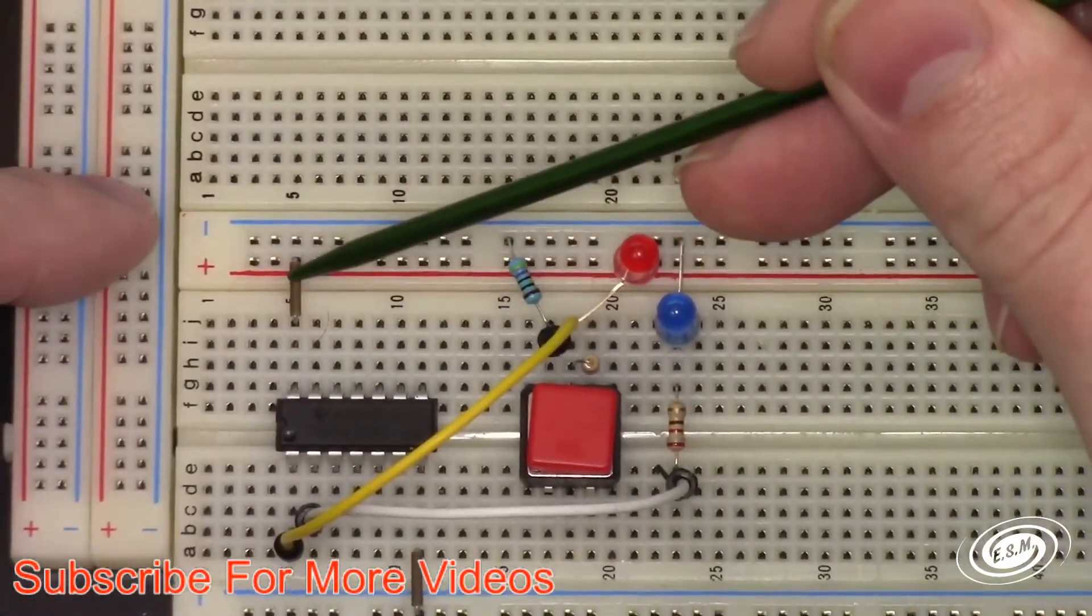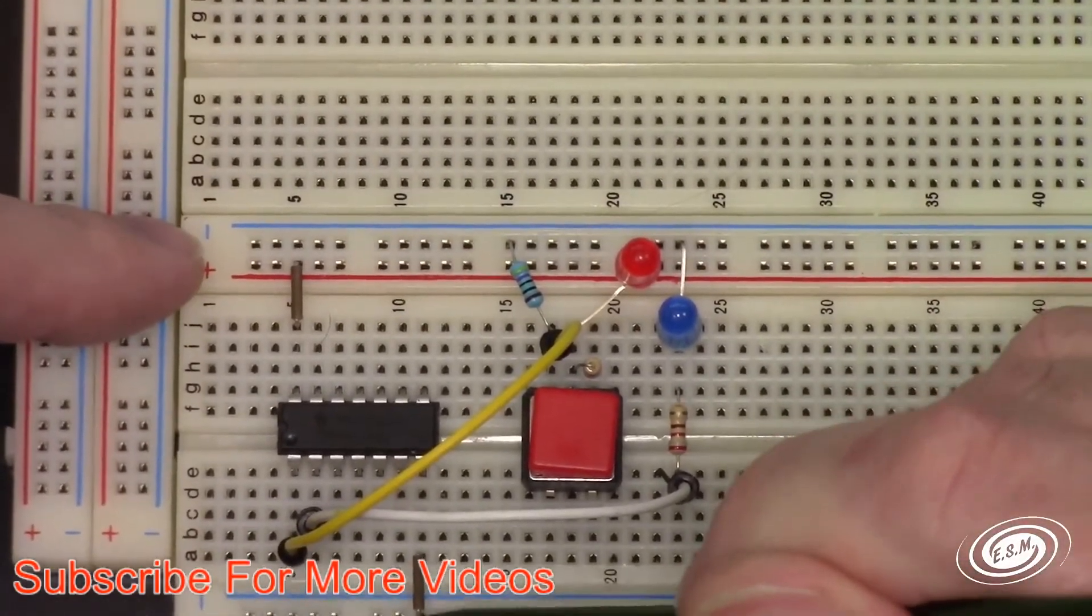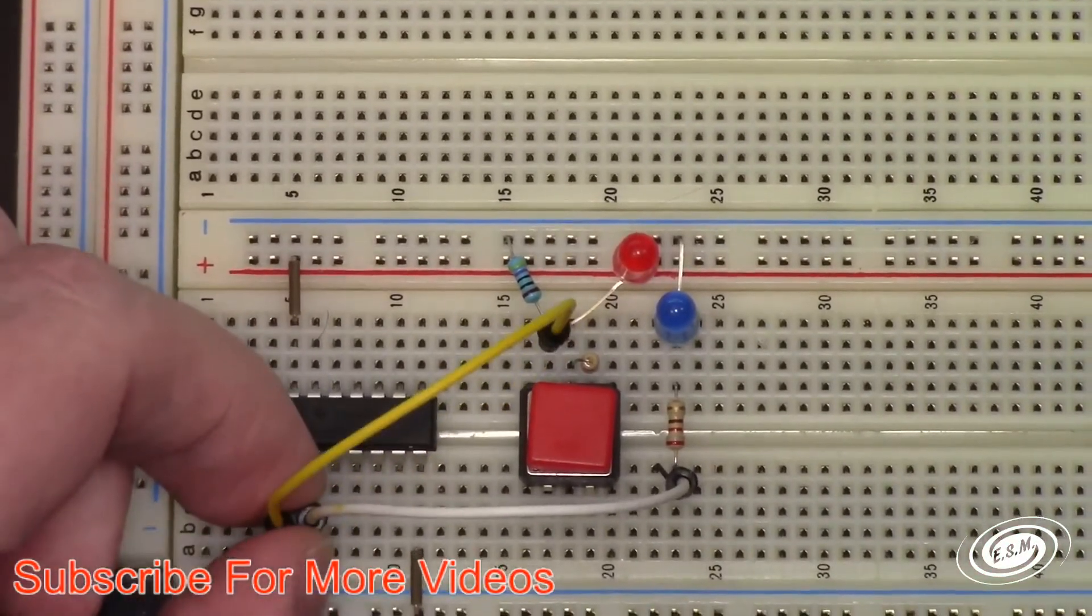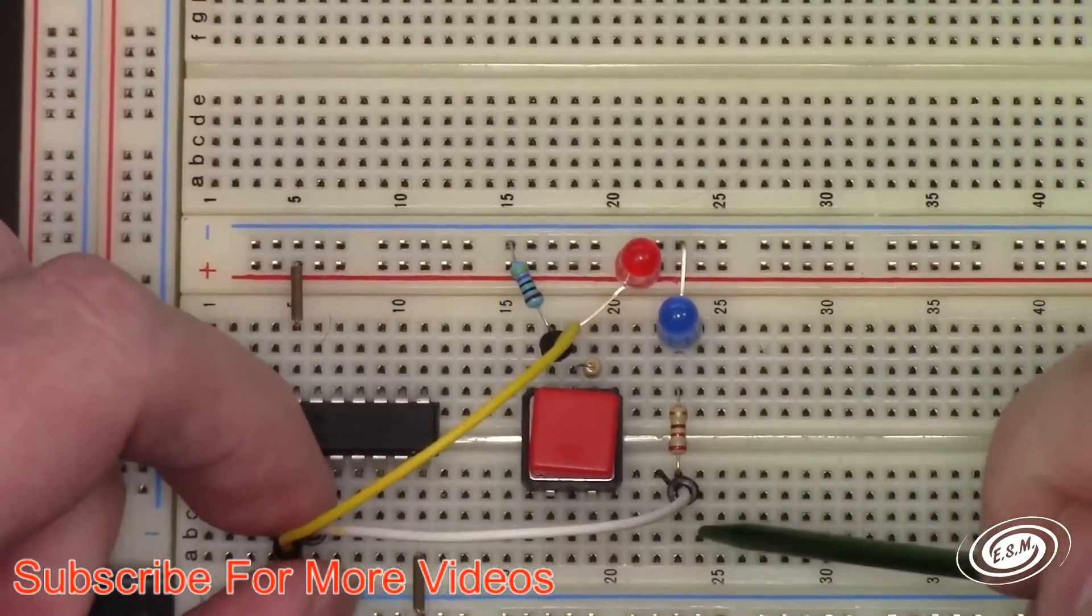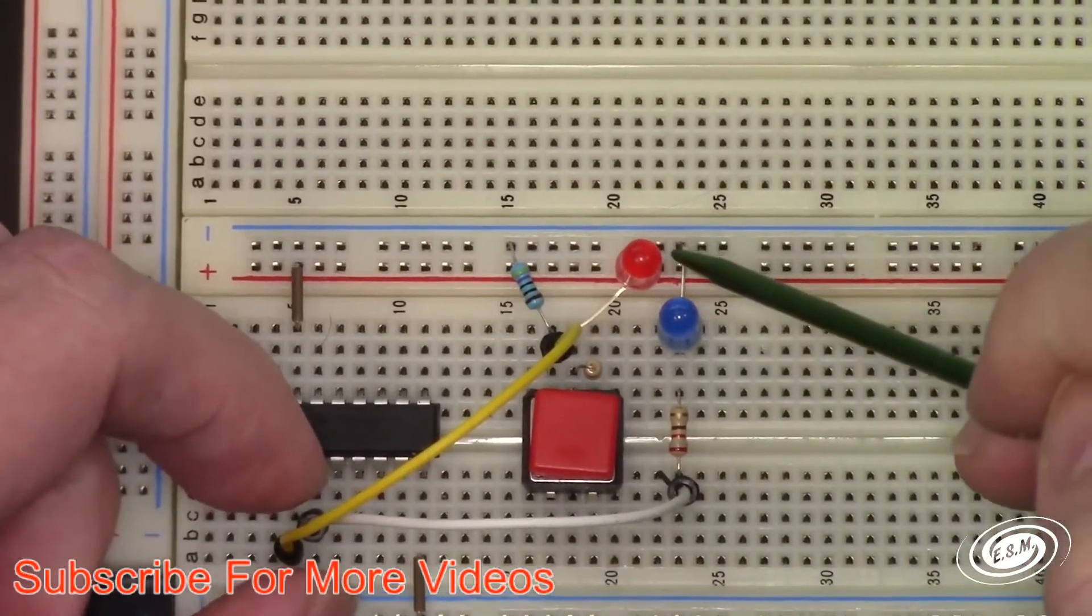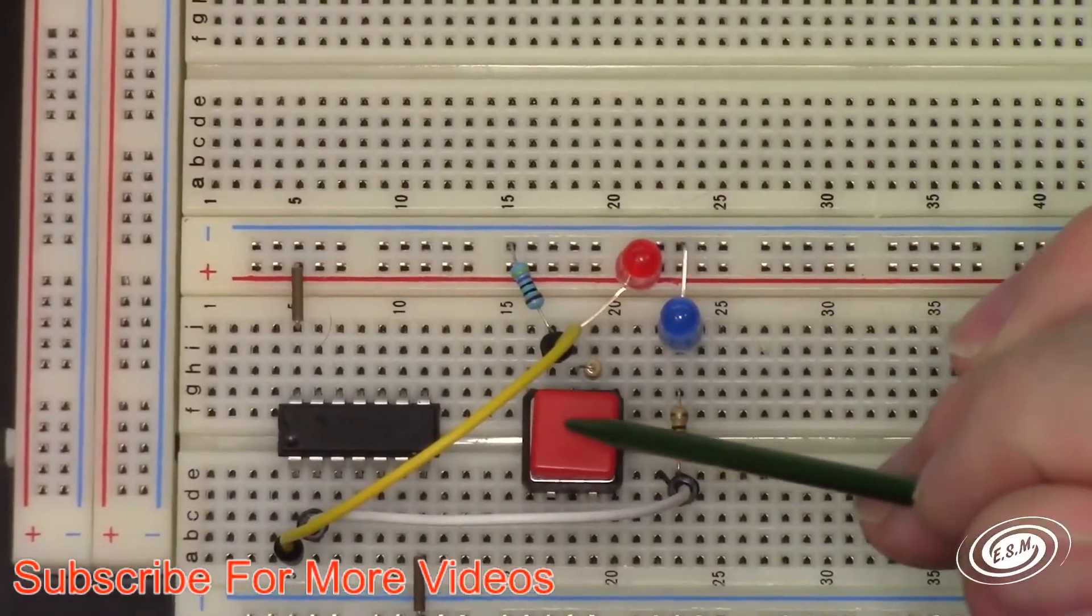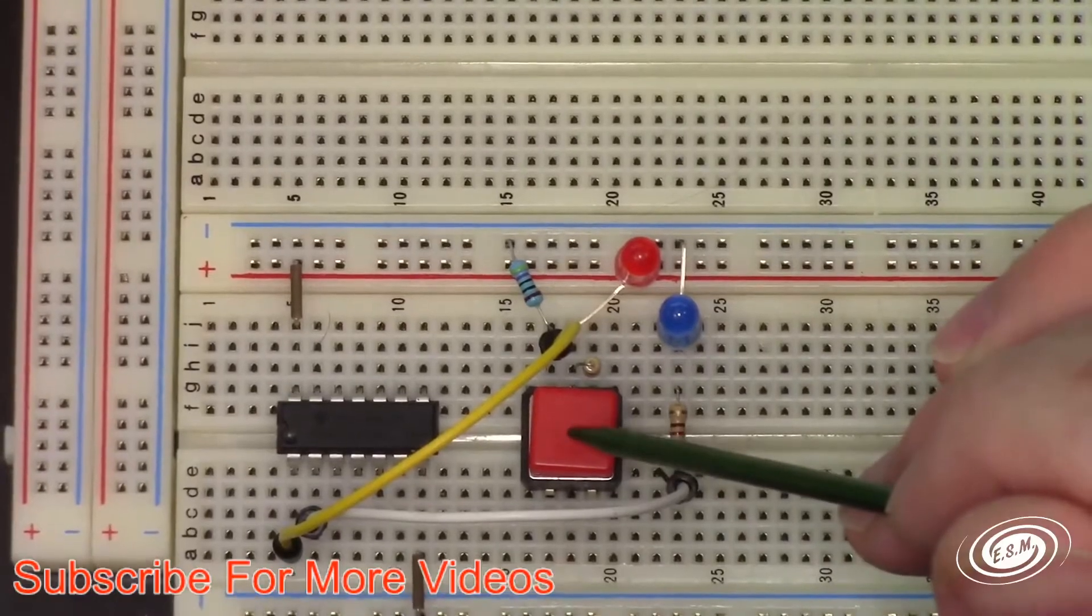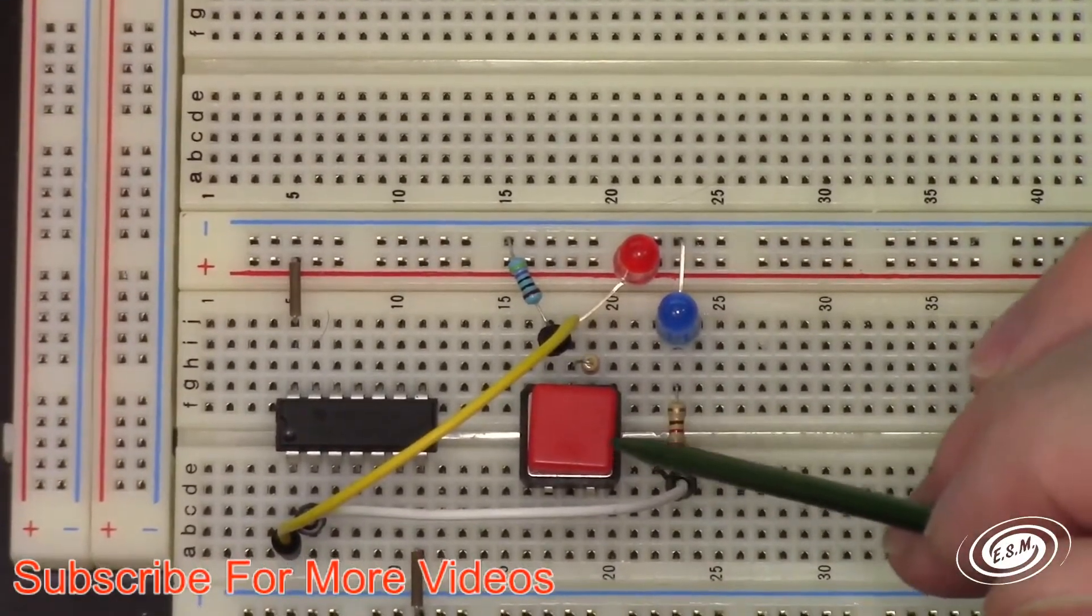On this circuit I have the chip. I have pin 14 tied to VCC or 5 volts. I have pin 7 tied to ground. I have pin 2, which is my output, tied to a resistor that goes to a blue LED that goes to the negative.